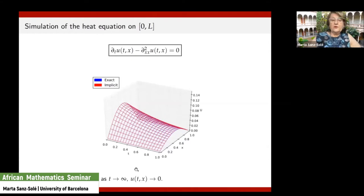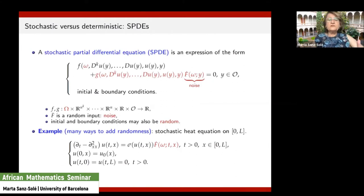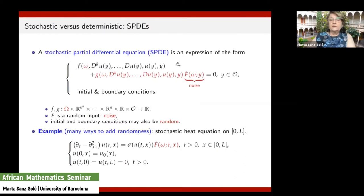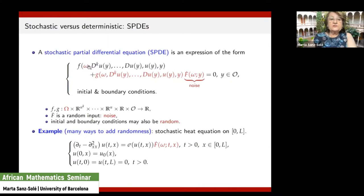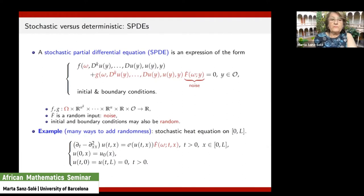Now, what is a stochastic partial differential equation? Looking at the pattern for PDEs, I define a stochastic PDE as an expression of this form. If you remember for PDEs we had only the f part — the part in black. Here I add two things: first, a parameter omega, and second, an extra term. Omega stands for randomness — it is a parameter belonging to a probability space Ω, and in statistical terms omega means an observation, the random parameter in the system.